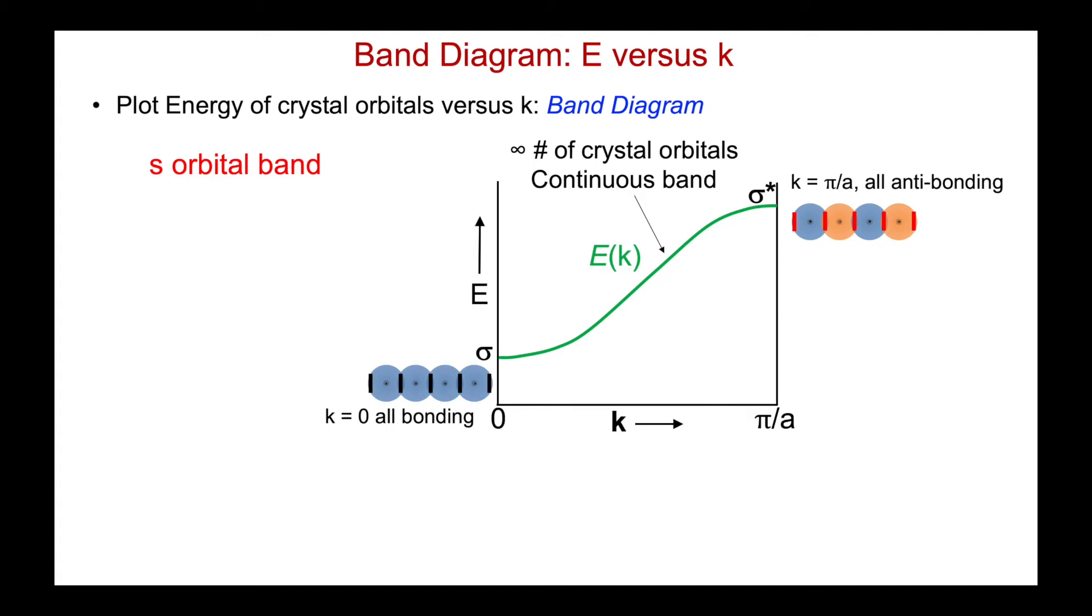So now we can plot the energy versus the k value, and that is a band diagram. So here's energy. Here's my value of k, increasing from 0 to π over a. Here's my all-anti-bonding orbital, the highest energy, all-bonding, lowest energy.